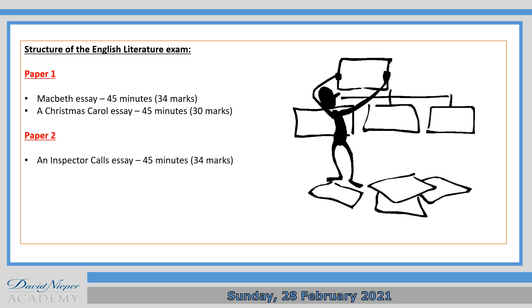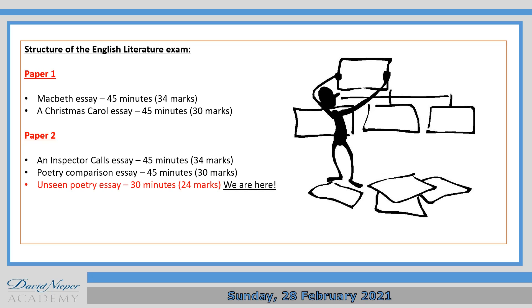Paper two is the biggest exam you'll be doing — it takes a longer time. First of all, a question on An Inspector Calls, which takes about 45 minutes. You then get to write about two poems that you have studied before. They will give you one poem and you have to make comparisons between that and another one, but the second poem is from memory — again, 45 minutes for that. And then finally, you get an unseen poetry essay, followed by an unseen poetry comparison.